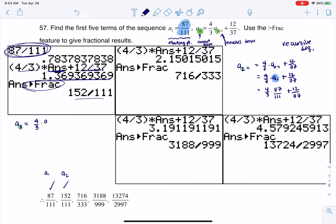It says 4 thirds times A sub 3 minus 1 plus 12 over 37, and when I simplify that, that is 4 thirds times A sub 2 plus 12 over 37, and we just found A sub 2, right. We found it to be 152 over 111, so I'm going to do 4 thirds times 152 over 111 plus 12 over 37, and that's what you see me doing right here.